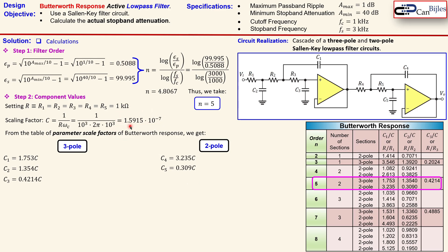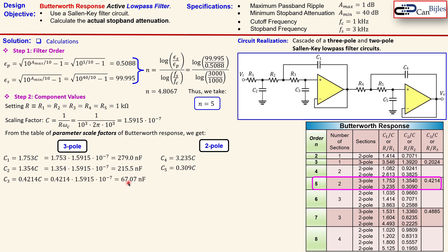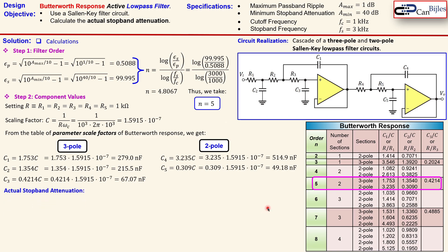Substituting the scaling factor into these expressions gives the final capacitor values: C1 = 279 nF, C2 = 215.5 nF, C3 = 67.07 nF, C4 = 514.9 nF, and C5 = 49.80 nF. We have now calculated all capacitor values by selecting the resistors, computing the scaling factor, and reading from the Butterworth response table. The design is now complete in terms of components.